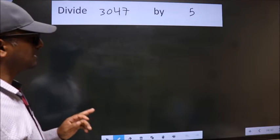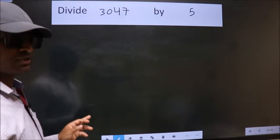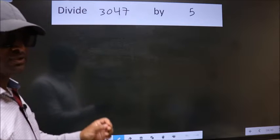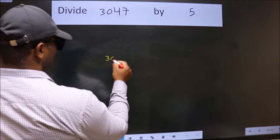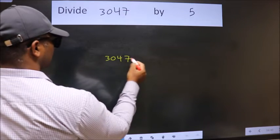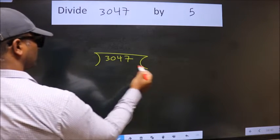Divide 3047 by 5. To do this division, we should frame it in this way. 3047 here, 5 here.